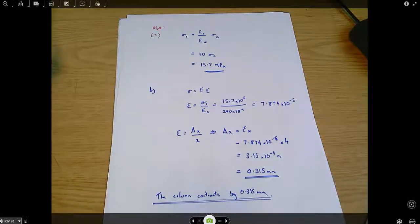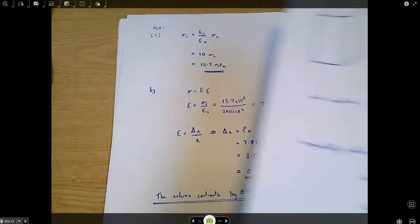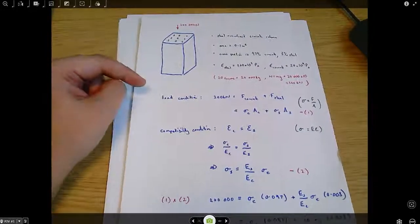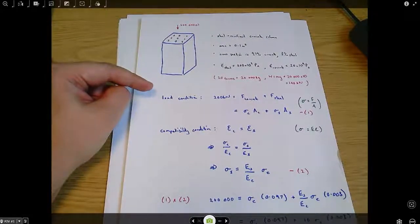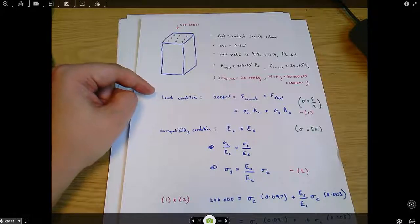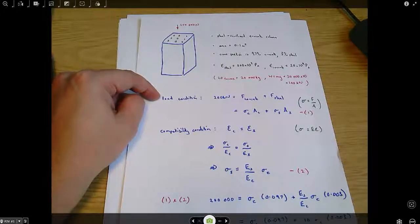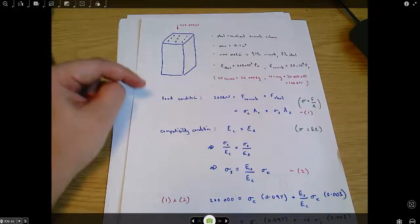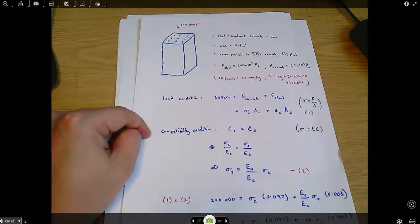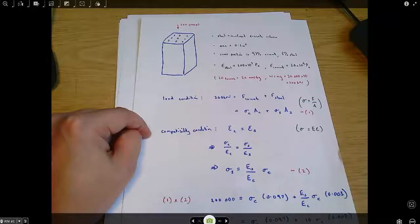So that's how you do those kind of questions on axial loading where you've got reinforced materials or two different kinds of materials. The important things are really to note that you're going to need two conditions. The first one is going to be how the load is balanced and it'll be supported by both materials typically. And the second one is going to be the compatibility condition which says that the strains have to match up somehow.